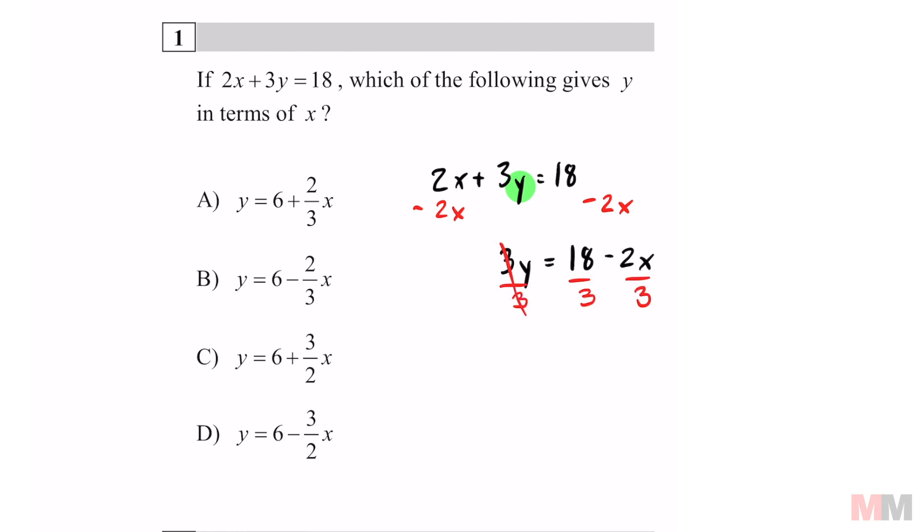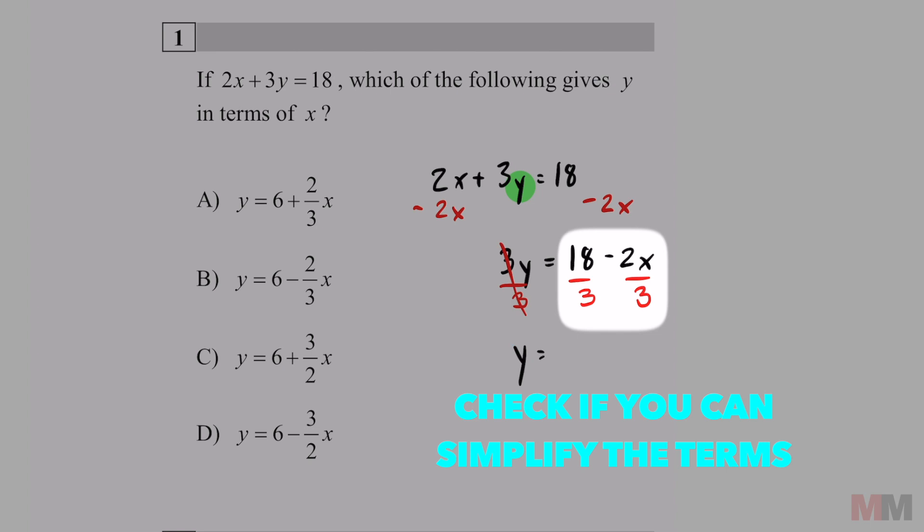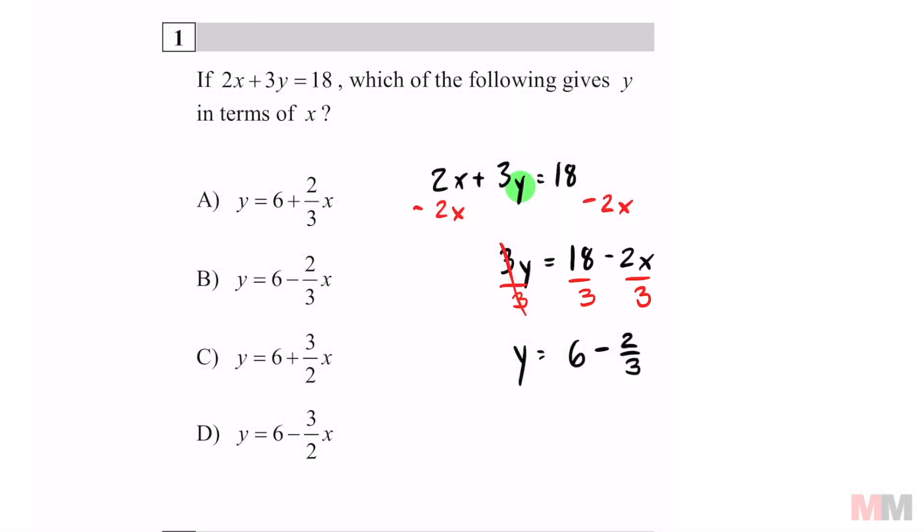The 3s cancel off, you're left with the y. 18 divided by 3 is 6 and negative 2 over 3. You can't simplify, so that is just negative 2 over 3x.